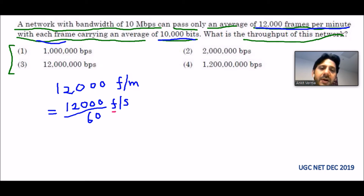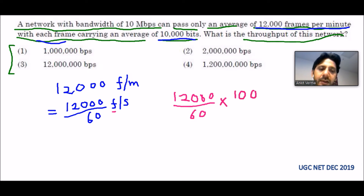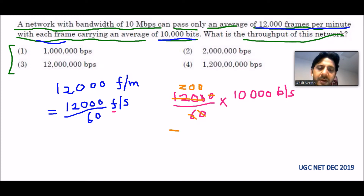Every frame contains 10,000 bits. So the throughput is 12,000 divided by 60, multiplied by 10,000 bits. Cancelling zeros, that gives us 200 multiplied by 1,000, which equals 200,000 bits per second.